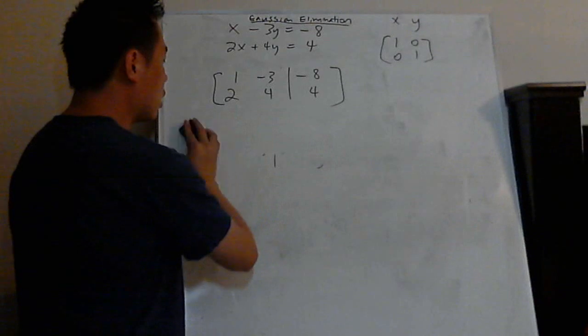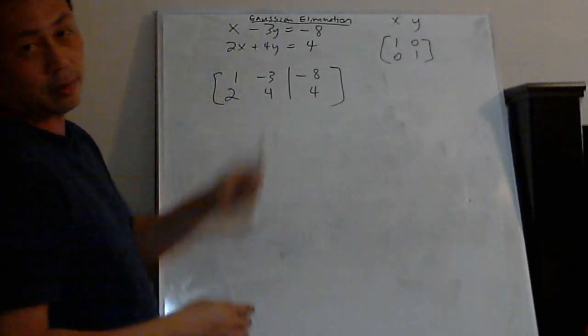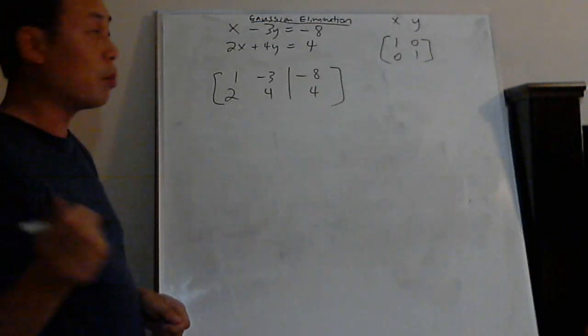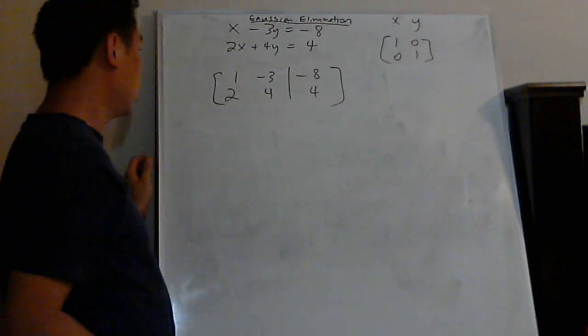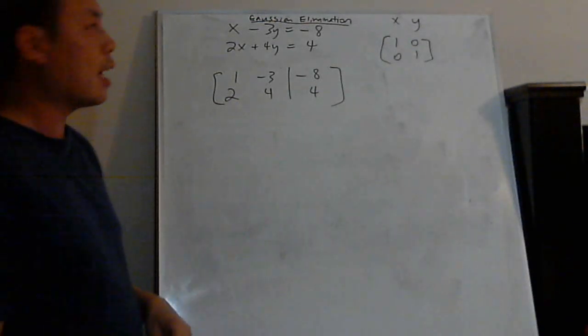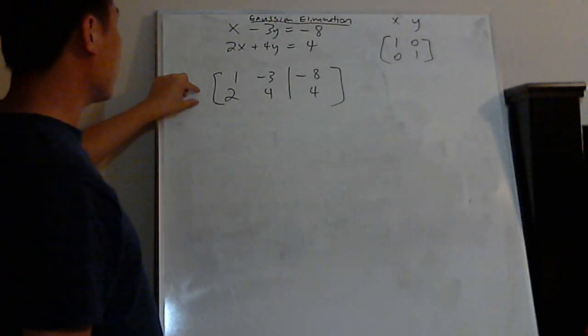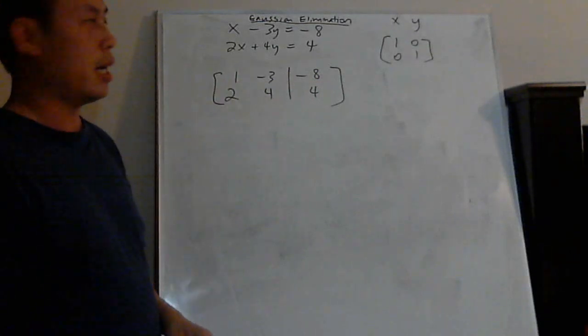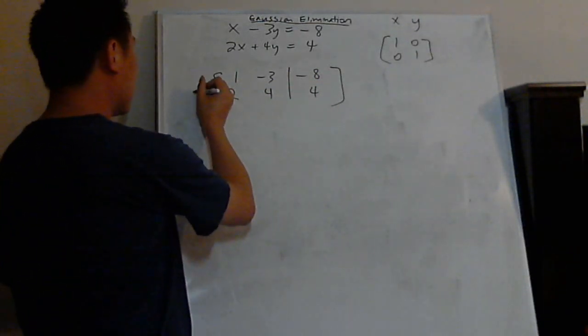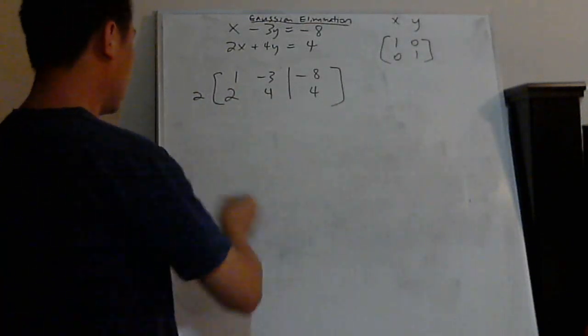And another thing you can do in row echelon, which is Gaussian elimination, is that you can also multiply a scalar to any row. So basically, you can say, okay, I want to multiply this row 2 here by 2. For example, I won't do anything for this problem.